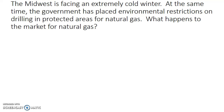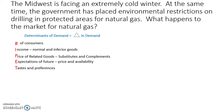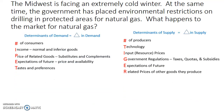The first thing you want to do is go through your determinants of demand and supply to see how they apply to the situation. The first event is that the Midwest is facing an extremely cold winter. Going through the determinants of supply — number of producers, technology, input prices, government regulations, expectations of the future, and prices of related goods — none of these apply to an extremely cold winter.